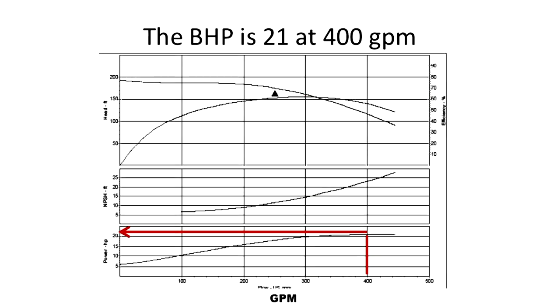The horsepower for specific gravity 1.0 is also determined from a flow intersecting with the horsepower curve and reading the BHP from the y-axis. For example, at 400 GPM, the brake horsepower is 21.